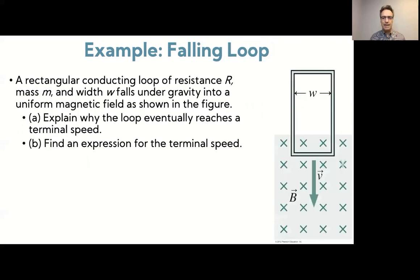That perhaps slightly more complicated, conceptually at least. A rectangular conducting loop of resistance R, mass M, and width W falls under gravity into a uniform magnetic field as shown in the figure. First question is explain why the loop essentially eventually reaches a terminal speed, and B, find an expression for that terminal speed.